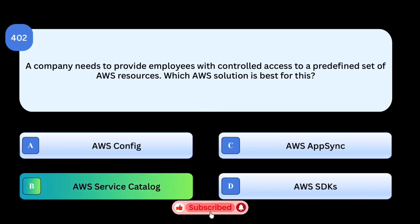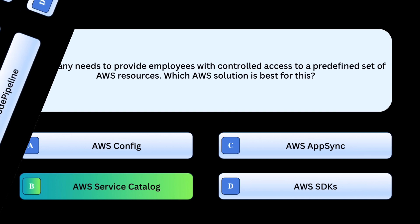Correct answer: AWS Service Catalog. AWS Service Catalog enables organizations to create and manage a catalog of approved AWS resources, ensuring employees can only deploy from a curated portfolio. Why others are incorrect: AWS Config tracks and audits resource configurations, not access control. AWS AppSync is a GraphQL API service unrelated to restricting AWS resources. AWS SDKs are software tools for interacting with AWS, not for access management.